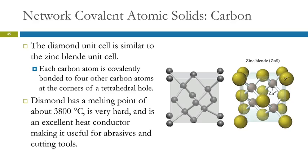A man-made diamond and a natural diamond — if they were both perfect, they would be identical. The difference between them probably has to do with what sorts of imperfections are present. The unit cell for diamond is similar to the zinc blende structure, where we have a face-centered cubic with zinc ions occupying half of the tetrahedral holes.